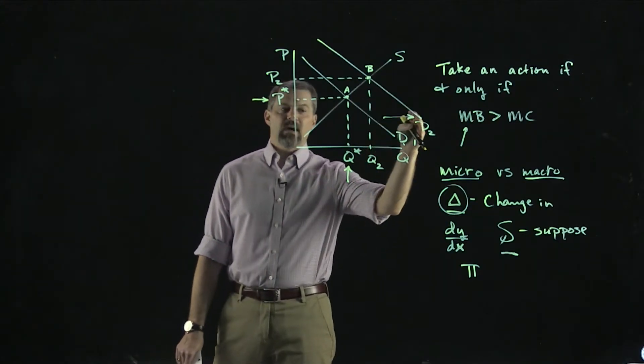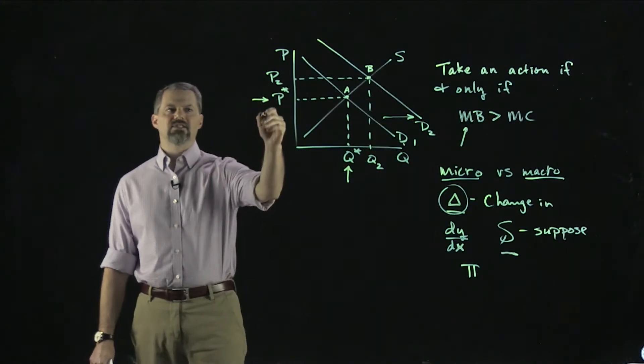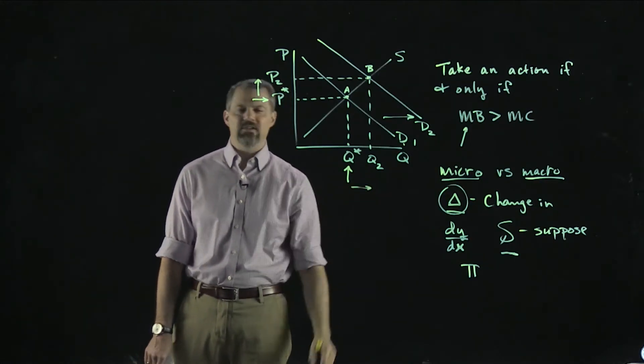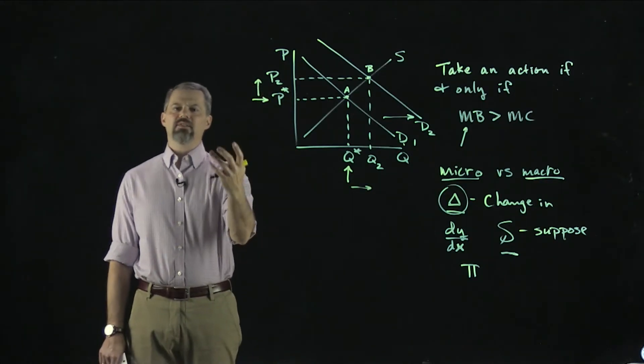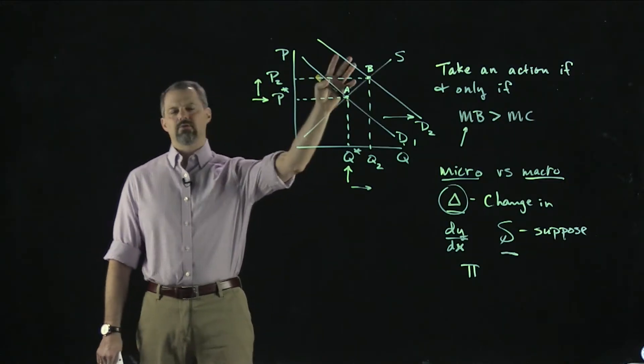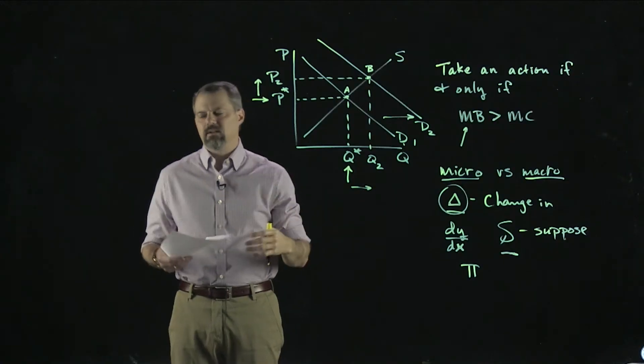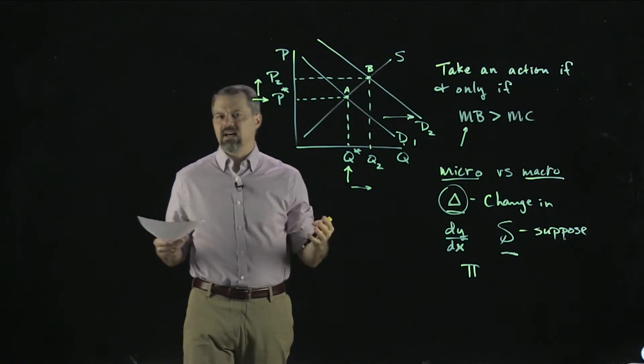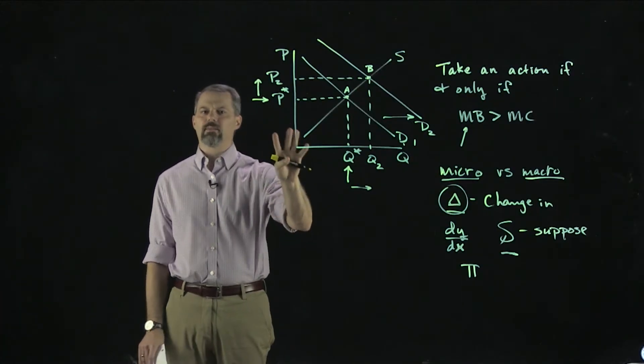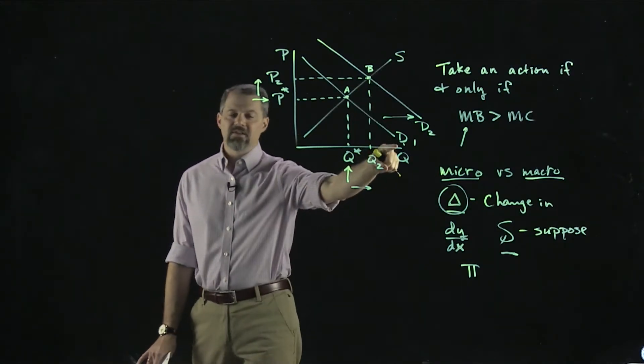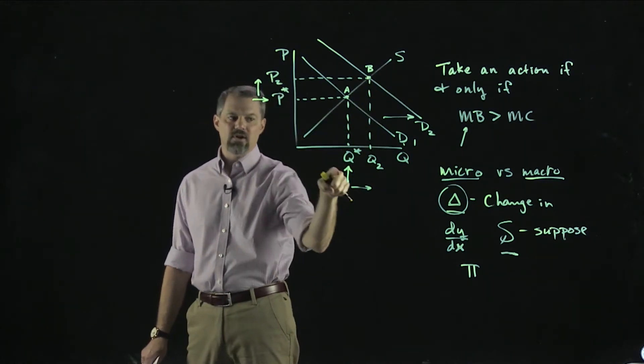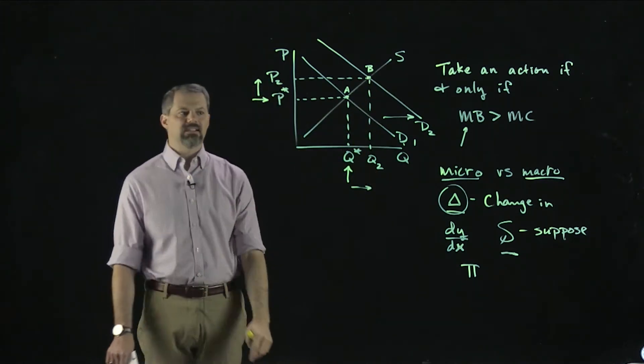Then we could think about that demand curve shifting, and we can solve for the exact increase in price and the exact increase in quantity. That is much more useful. Just talking about P's and Q's and drawing lines on the board, that's okay if you're just trying to get a basic level understanding of how markets work. But if you really want to put this into practice, we need to know what this demand curve looks like and what that supply curve looks like and what those numbers are. That's what we're going to do in this class.